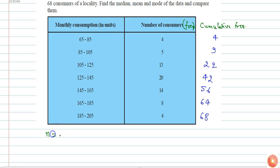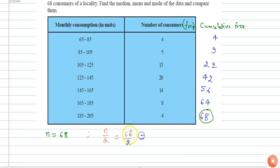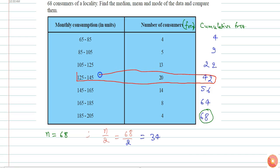Since the total frequency n is 68, we shall locate n by 2, which is 68 divided by 2, equals 34. We need to find the class whose cumulative frequency is greater than 34. Here 42 is greater than 34, so the median class will be 125 to 145.